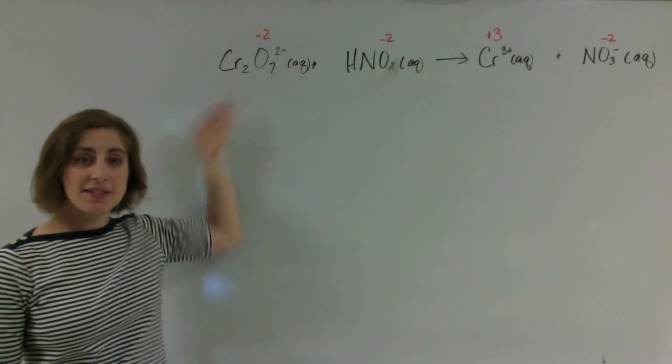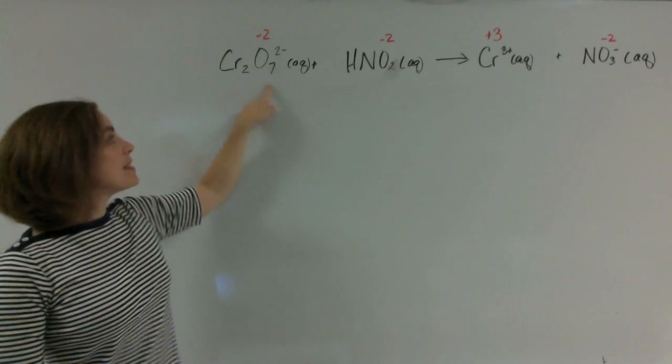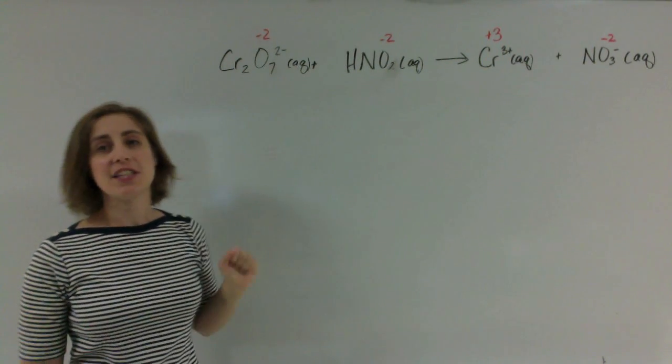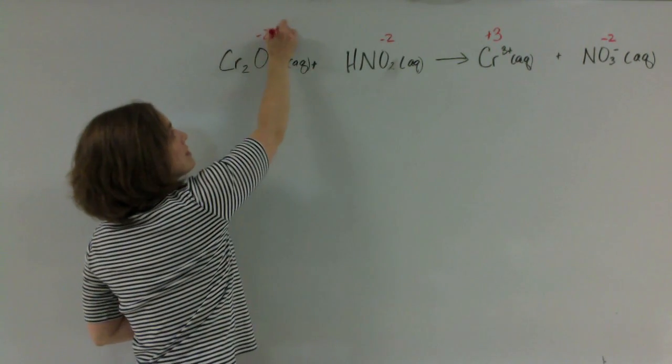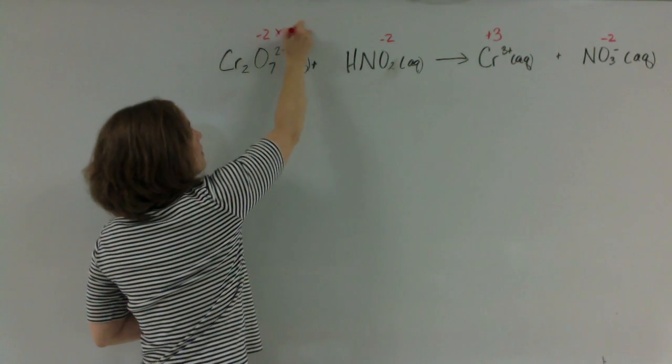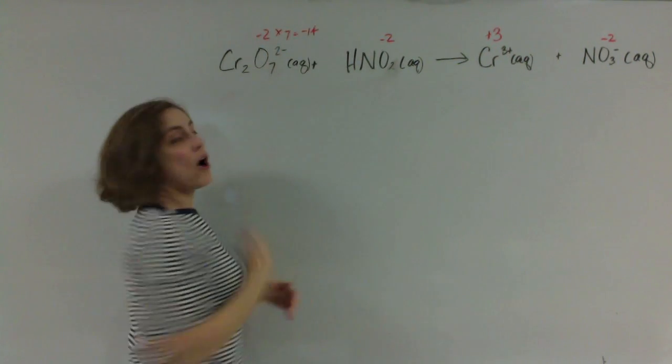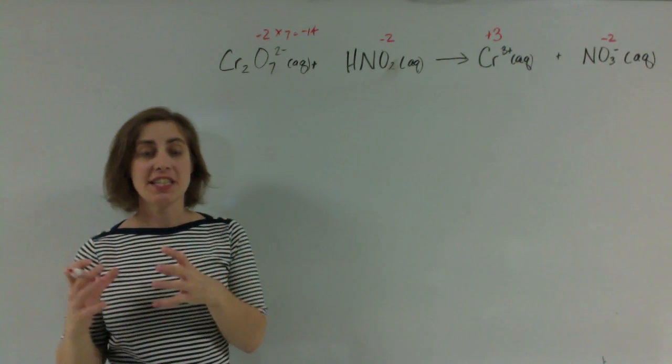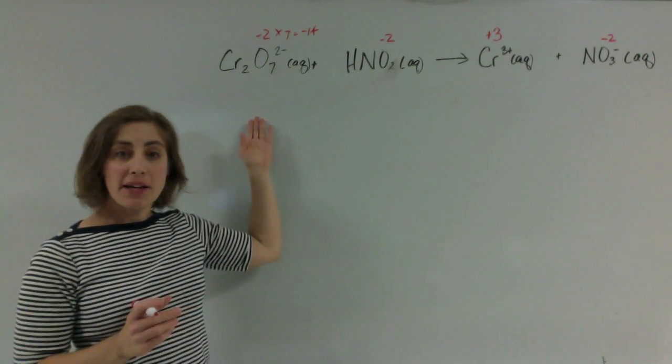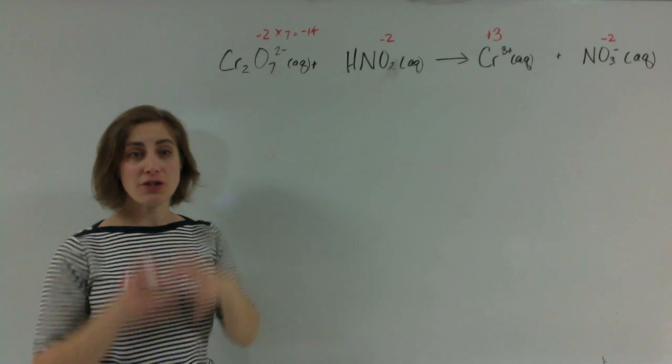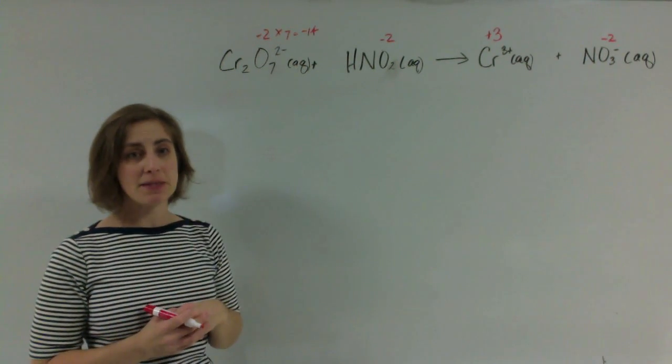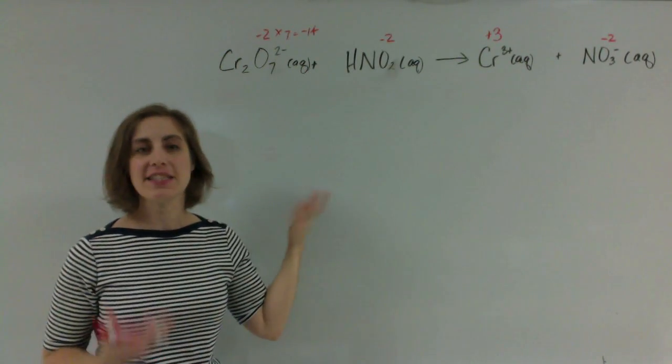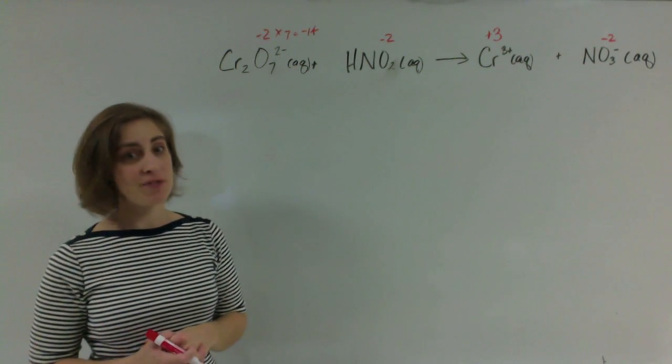I'm going to start with my dichromate since it's at the end here. We have 7 oxygens, and those 7 oxygens each have an oxidation state of negative 2. That means overall the oxygens contribute a negative 14 charge. The dichromate has a negative 2 charge overall when you consider the chromium. So what plus negative 14 gives us negative 2? Hopefully you said positive 12.